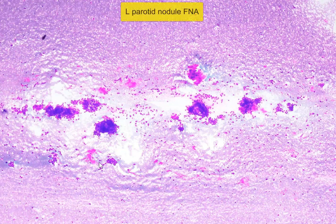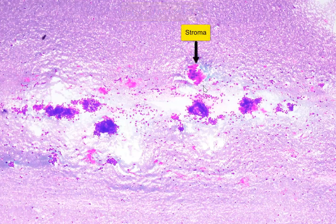This is an FNA of a left parotid nodule, and at this magnification we can see that there is a stromal component as well as an epithelial component.